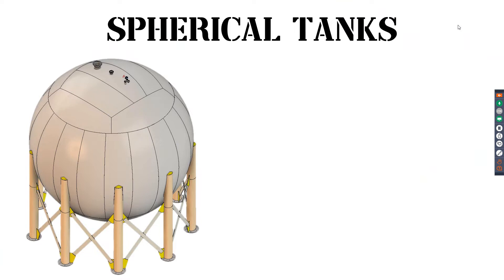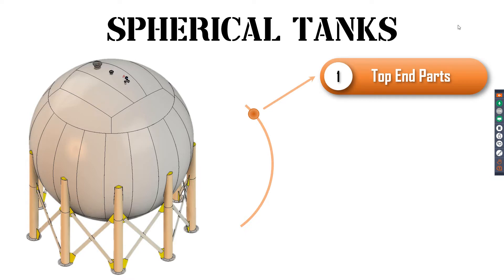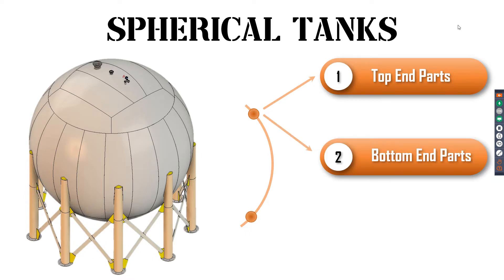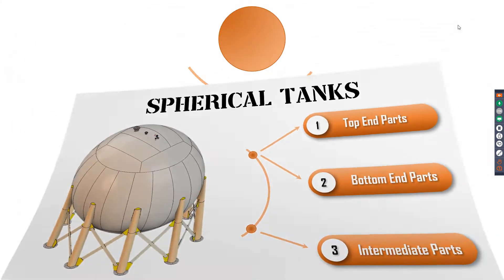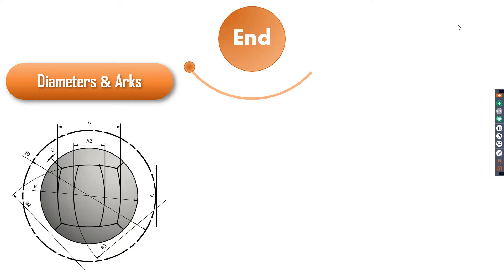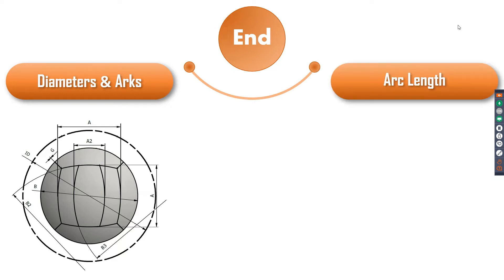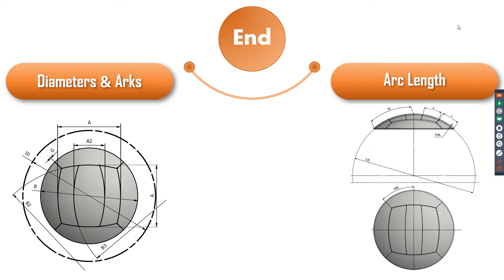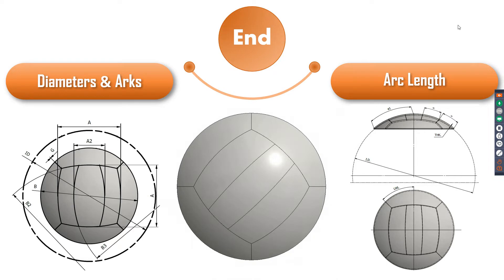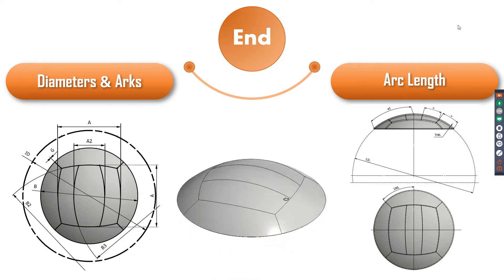New features for spherical tanks. We can divide the main parts of spherical tanks into three main items: the top end parts, the bottom end parts, and the intermediate parts. For the top and bottom ends, there are two ways to define the segments: the first by defining the diameters and arc lengths, and the second by defining only the arc lengths as per the image on the right-hand side. Both give the same configuration as shown on the 3D model.